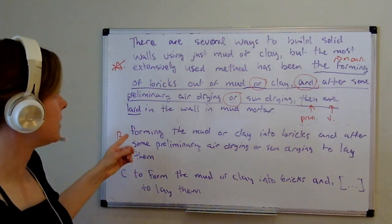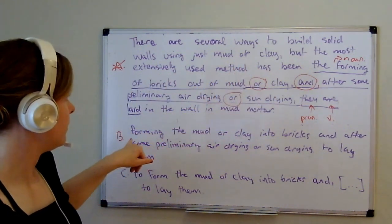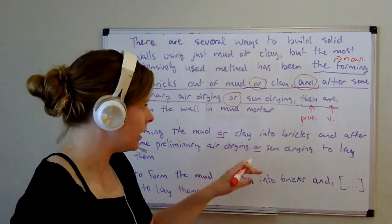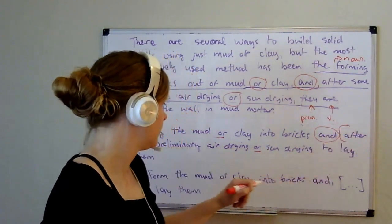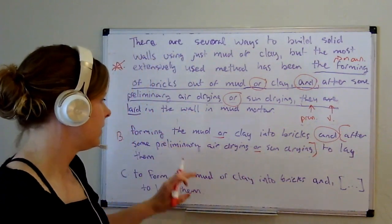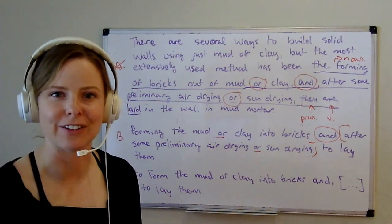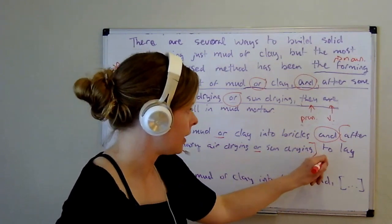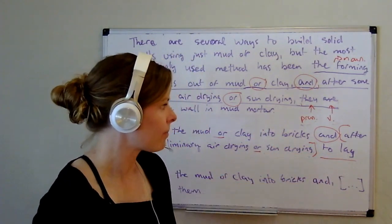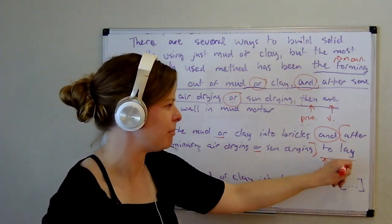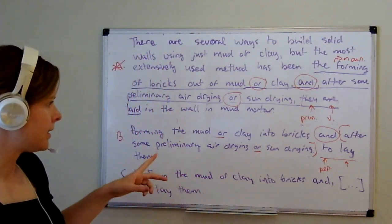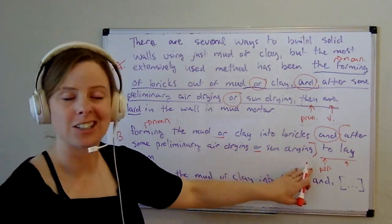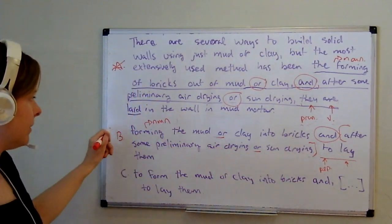Looking at B, we have the method has been 'forming the mud or clay into bricks and after some preliminary air drying or sun drying, to lay them.' Again, we can ignore the middle bit for parallelism. What has changed from A is that we now have 'to lay' instead of 'they are laid.' 'To' is a preposition followed by the base form of the verb 'lay.' It's set in parallel with 'forming,' which is a noun. These things just don't match grammatically — 'to lay' trying to be parallel to the noun 'forming' doesn't work. Get rid of B.